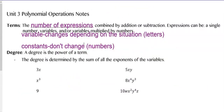Let's talk about one of your vocabulary words: terms. Terms are the number of expressions combined by addition or subtraction, so they always have an addition or subtraction symbol between them. It could be a single number, or variables and/or variables multiplied times numbers. Variables are the letters — the X's, N's, T's, or whatever. Constants are numbers that don't change; a number 3 is always 3.